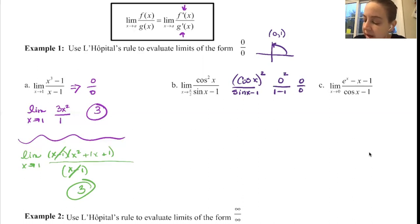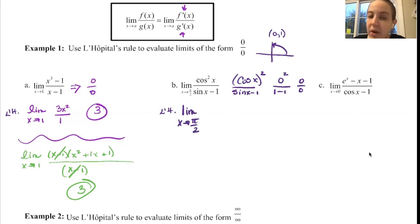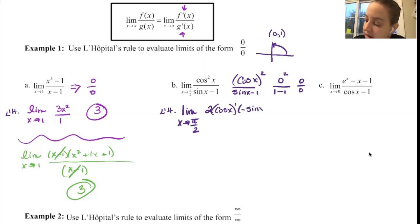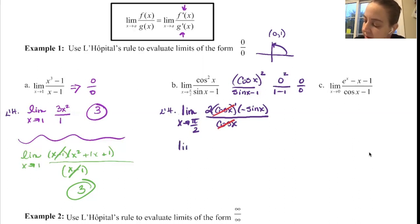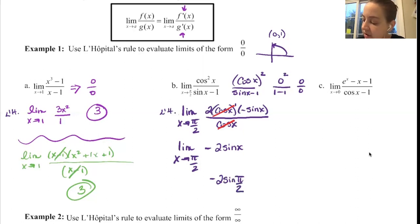So now we can use L'Hopital's rule — I usually leave myself a little note that I used L'Hopital at this step. This becomes the limit as x approaches π/2. For cos²(x), you can do a product rule or chain rule. Going with the chain rule: 2cos(x) · (-sin(x)). In the denominator, the derivative of sine is positive cosine, and the derivative of 1 is 0. The cosines cancel out, giving the limit as x approaches π/2 of -2sin(x). Sine of π/2 is 1, so this is -2 × 1 = -2.